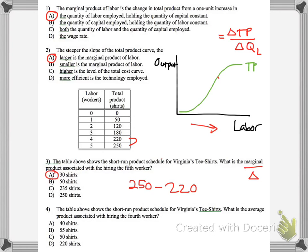The table shows the short run product schedule. What's the average product associated with hiring the fourth worker? So, the average product is simply, how much did you produce total? Well, there are four workers. You can produce 220 shirts, and how much is that per worker? Well, you have four, so let's divide by the total number of workers you have,